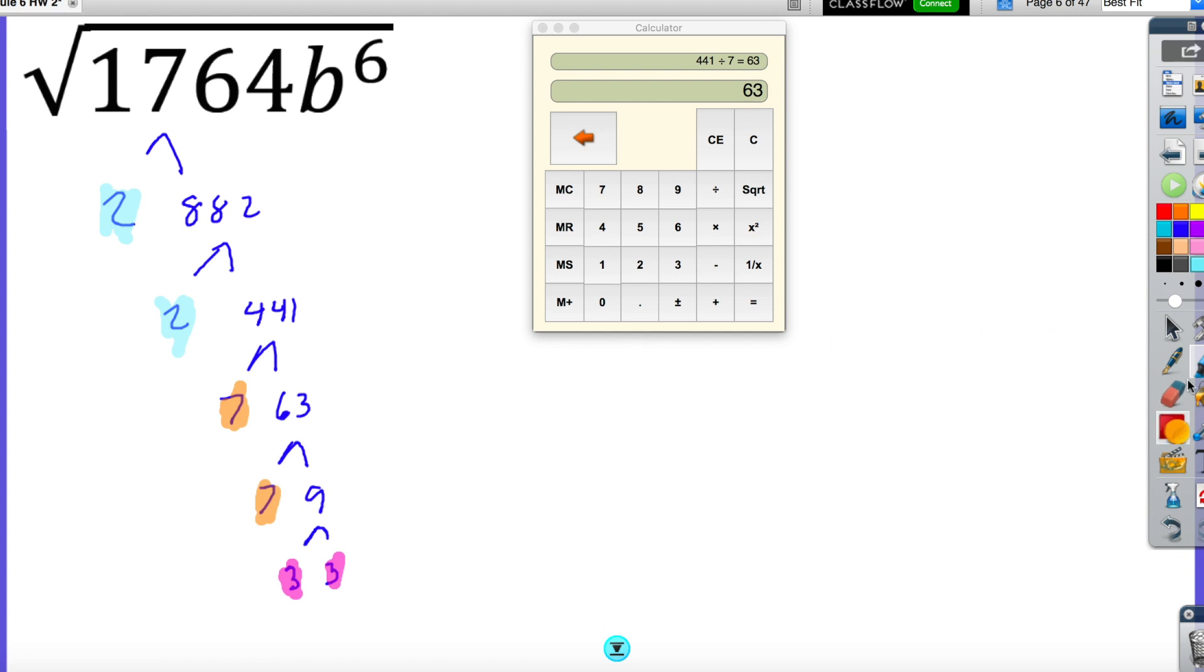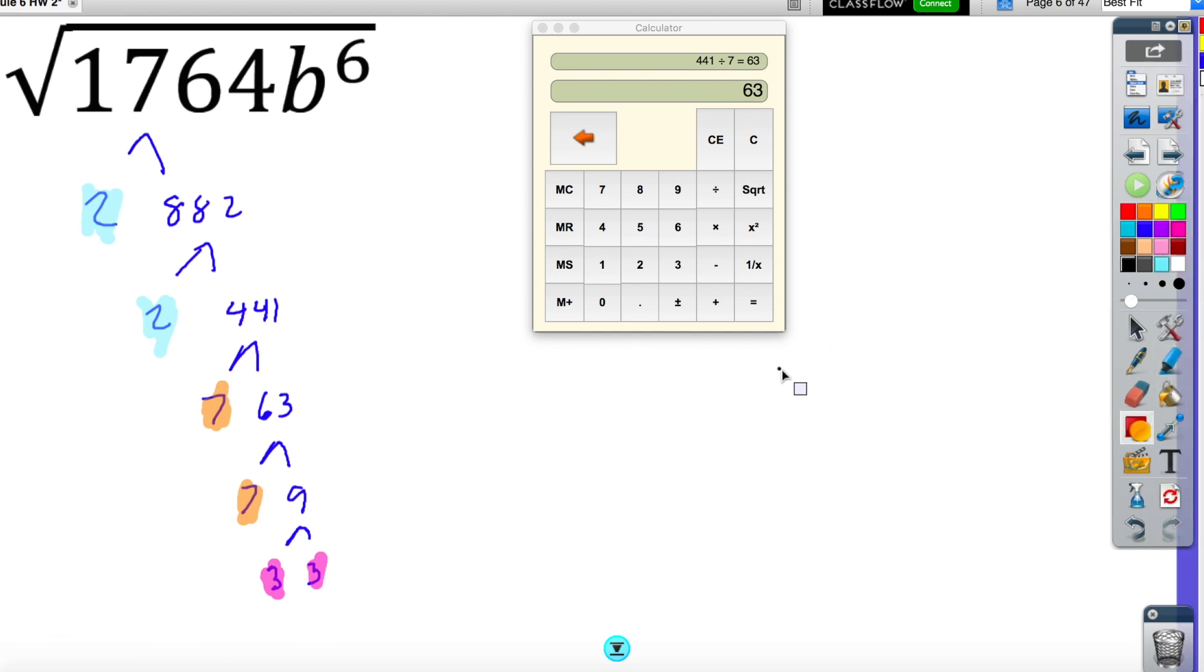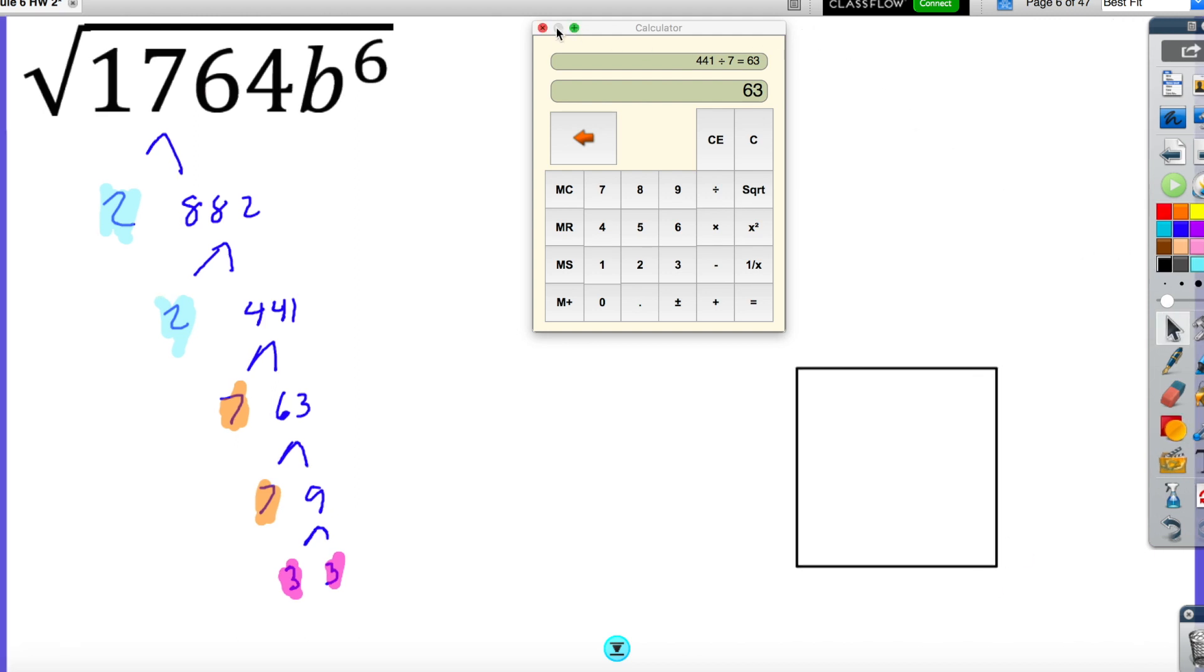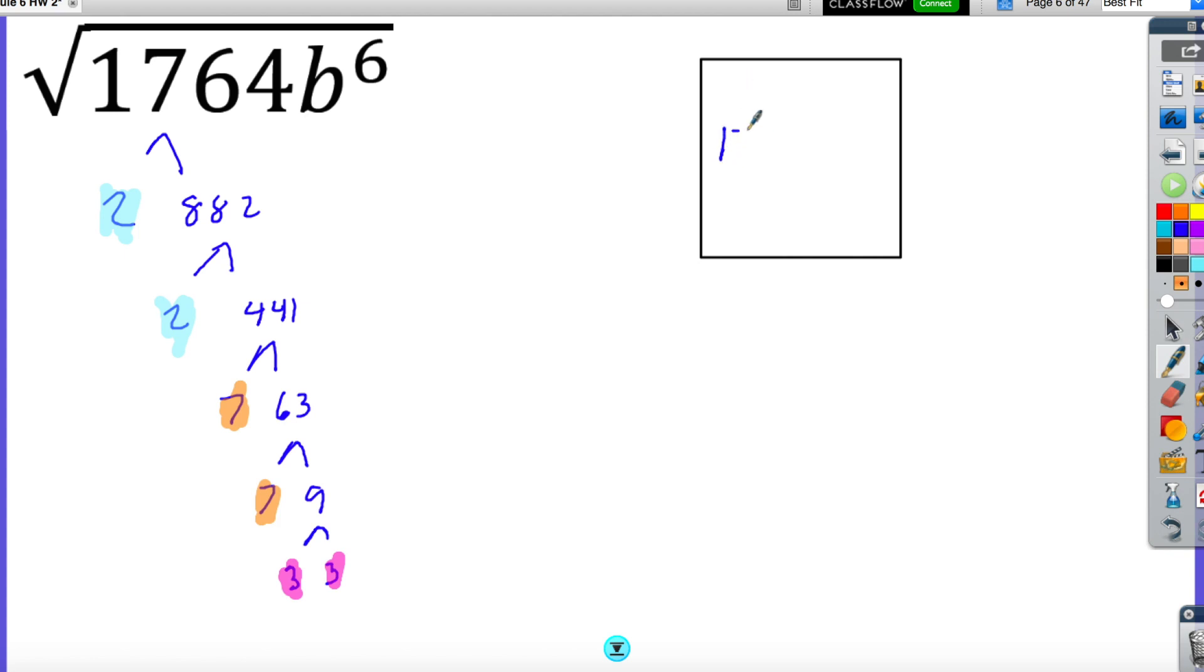We are going to pull out my pairs. One more time. If this is my square, and it had an area of 1764 b to the 6th power. I pulled out a 2. I pulled out a 7. And I pulled out a 3. 2 times 3 is 6. 6 times 7 is 42. We're almost done. We still have to take care of b to the 6th power. Remember, I'm looking for pairs. If I have 6 of them, I have 1, 2, 3 pairs, which means I would have b to the 3rd power right here and b to the 3rd power right here.